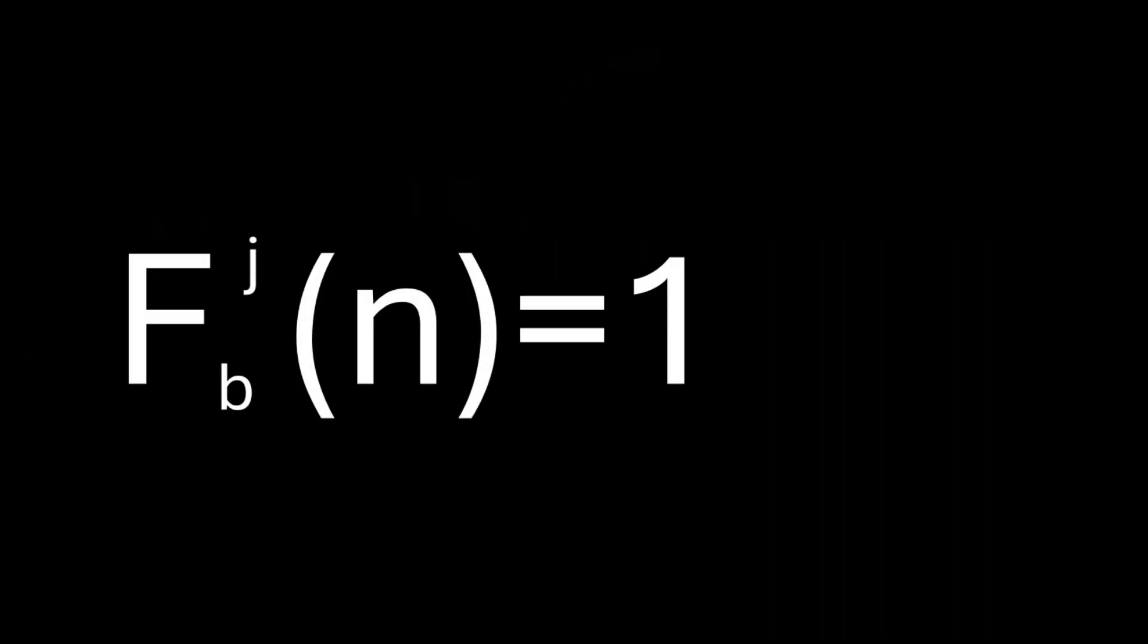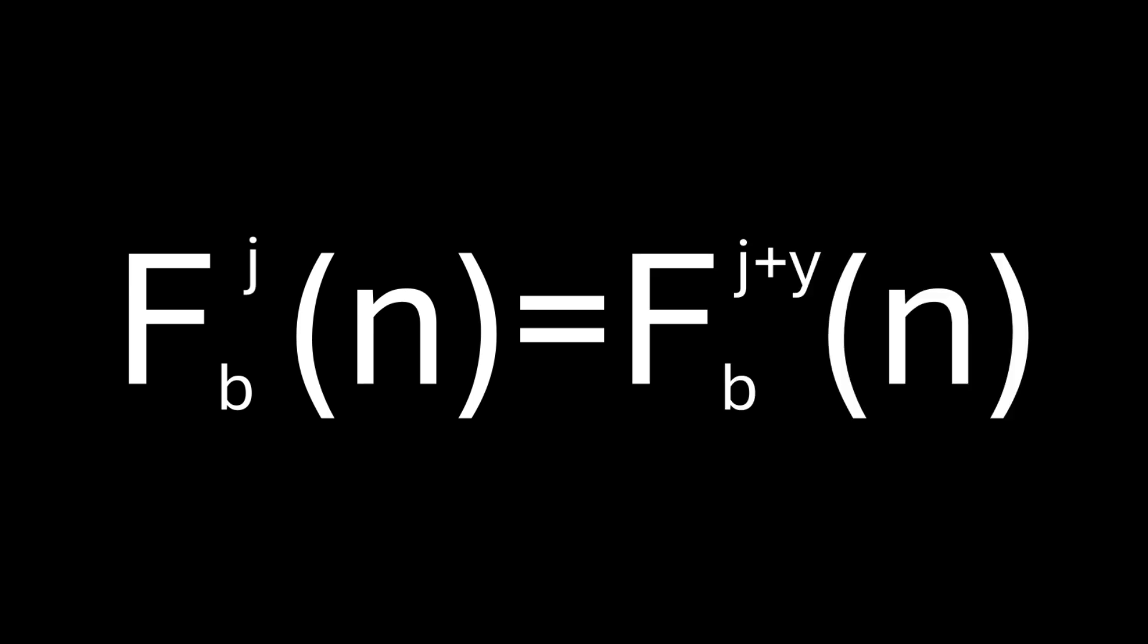A number is called b-happy if it is happy when interpreting its digits in base b. That is, the perfect digital invariant function returns the value 1 after some j iterations. But this is a bit misleading since in bases other than 10 it is possible there is more than one invariant. So in more general terms, a number is b-happy if at some iteration j, every further iteration j plus y equals the jth iteration.